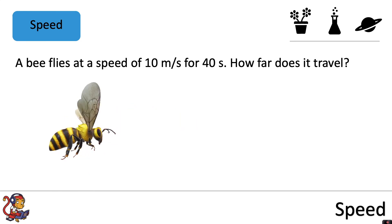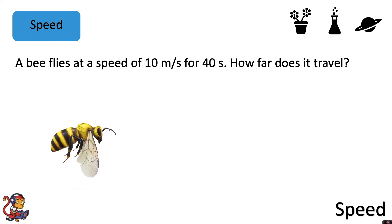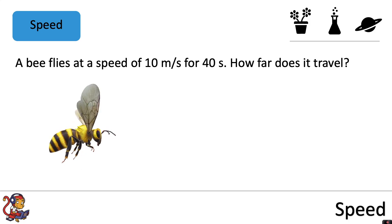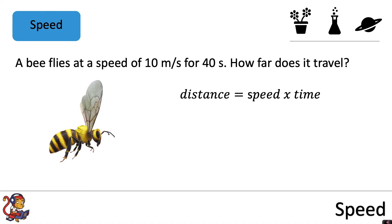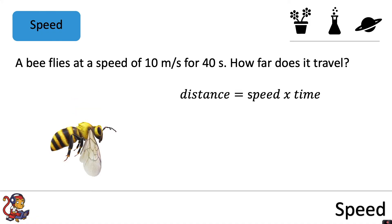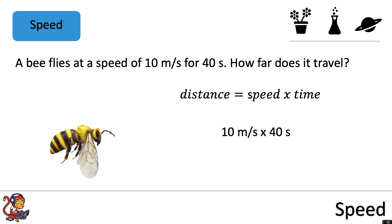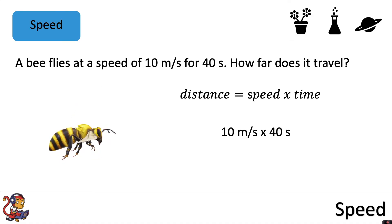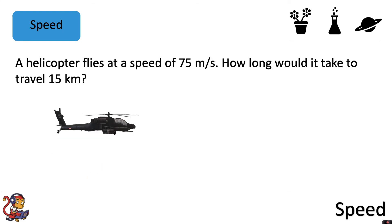In this question, a bee flies at a speed of 10 meters per second for 40 seconds — how far does it travel? This time we're given speed and time and need to work out distance, so we use the equation distance equals speed times time. Our units are correct so we don't need to change any. We put the numbers in: 10 meters per second multiplied by 40 seconds, so our distance would be 400 meters.